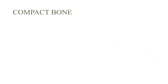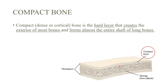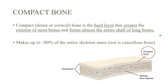Compact or dense bone is basically that outer shell — the hard layer that creates the outside of most bones. It is the main part of long bones, forming the exterior of most bones.